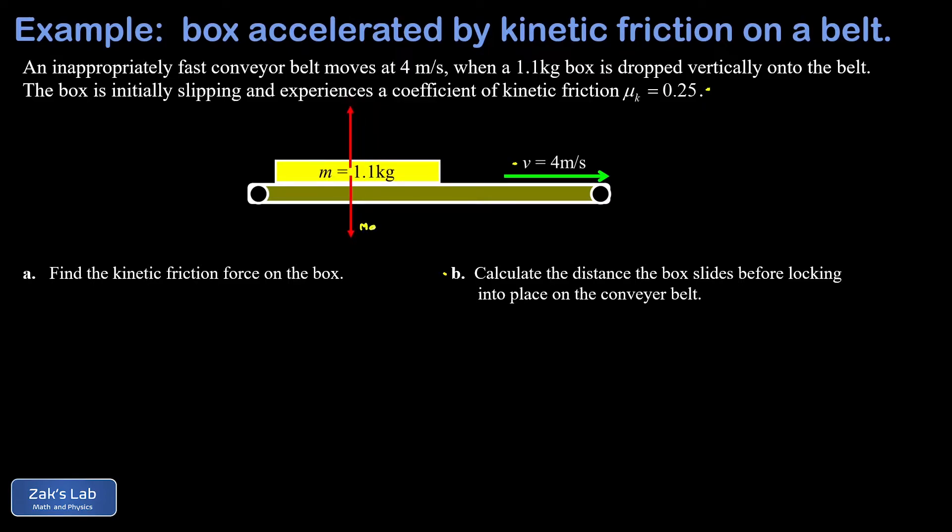Pointing straight down, we have the force of gravity on the box given by mg. We'll use 1.1 kg for the mass and 9.8 m/s² for g, which gives us approximately 10.8 newtons.